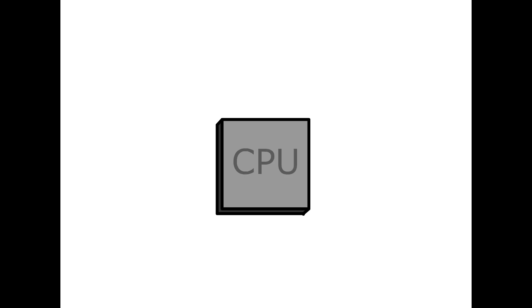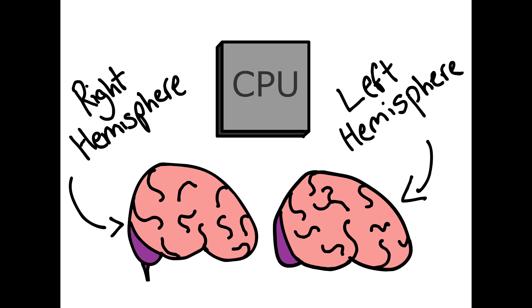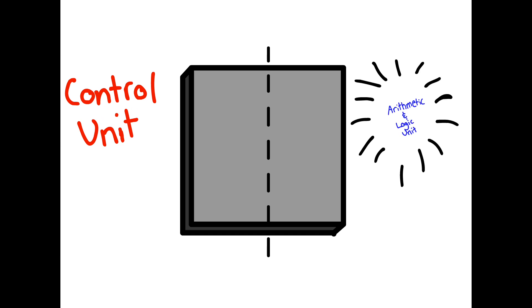This is the CPU. The CPU is the brain of the computer, and much the way your brain has a left and a right hemisphere, the CPU has two main units, the control unit and the arithmetic and logic unit.